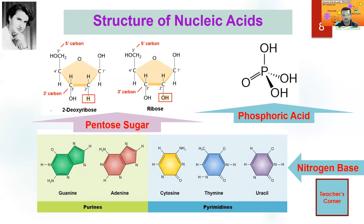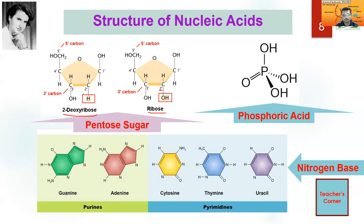There are pentose sugars. In case of RNA it is ribose sugar, whereas in case of DNA it is deoxyribose sugar. Looking at the carbon numbering — on the second carbon, in case of RNA, there is an additional OH group present. But in case of DNA, this oxygen is missing. That's why it is called deoxyribose. This is the sugar which is found in DNA.